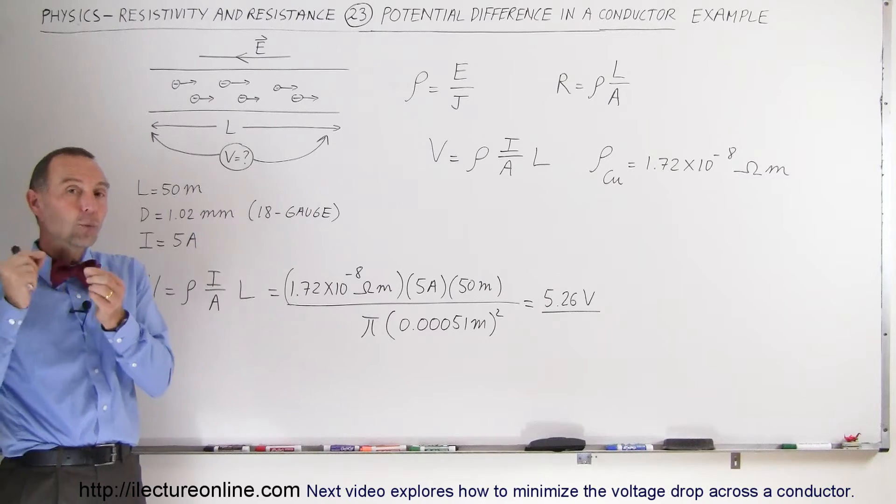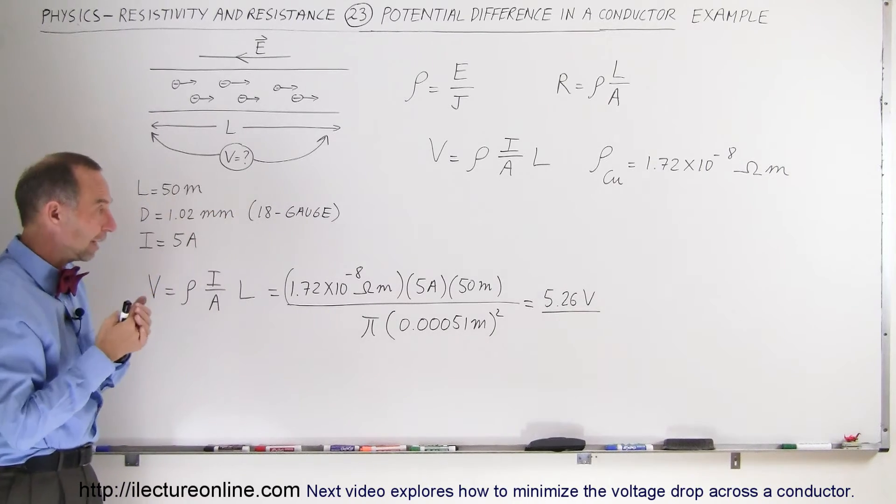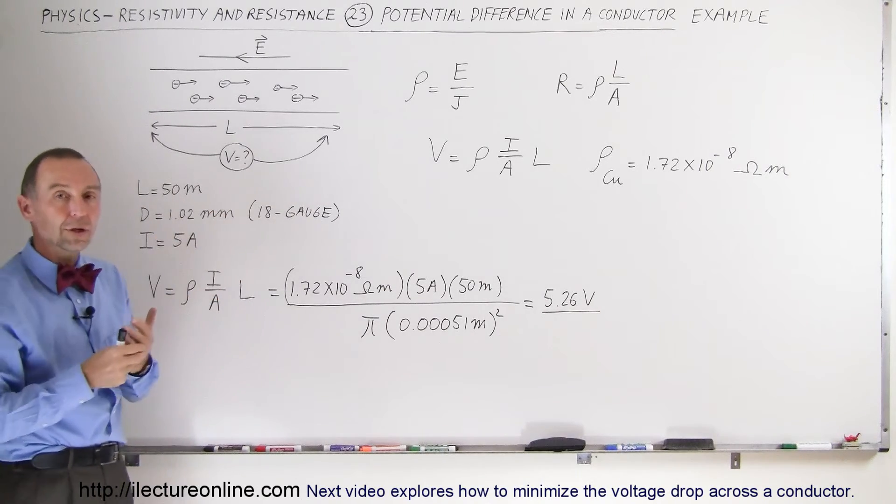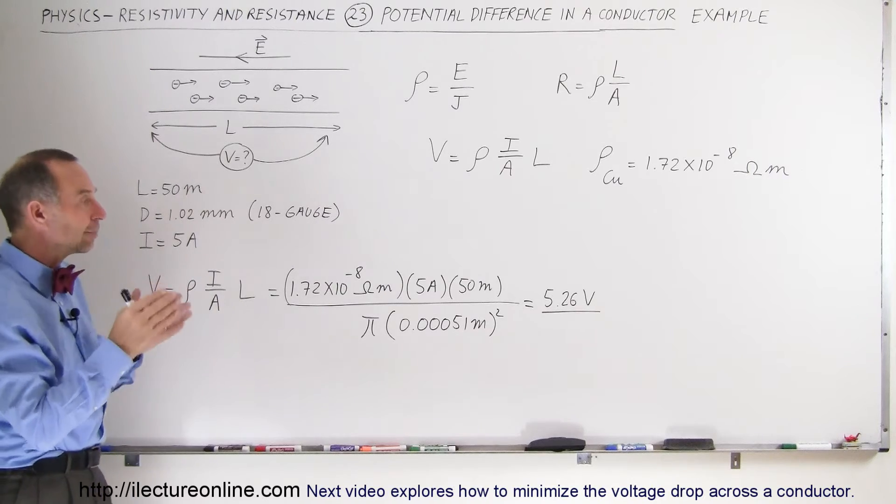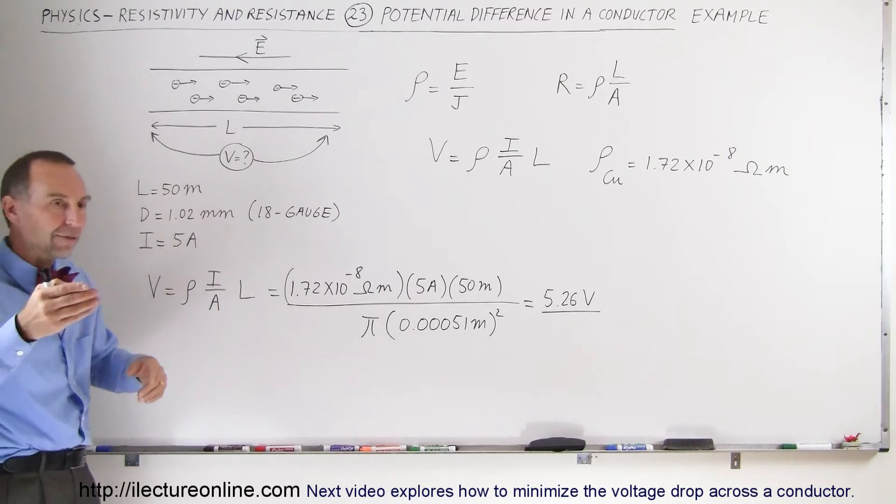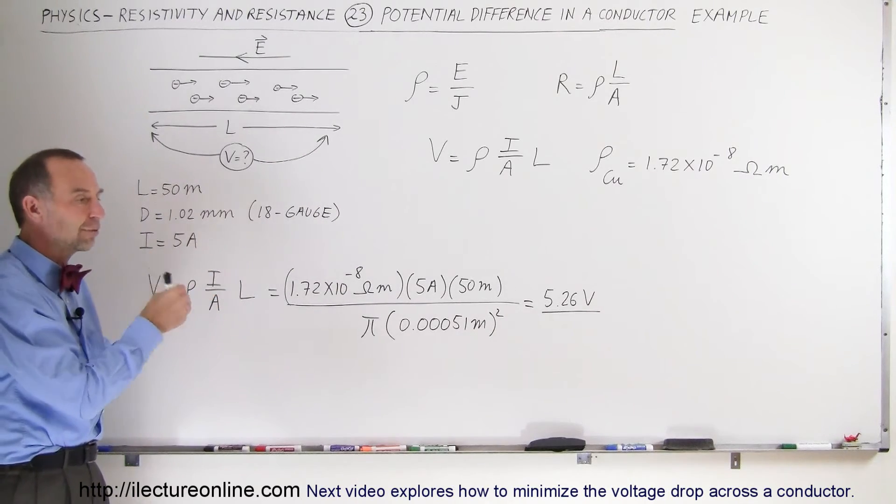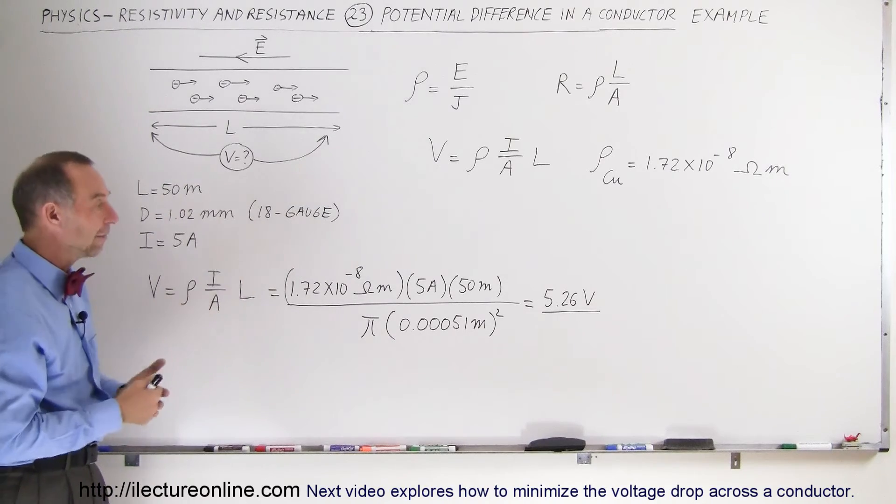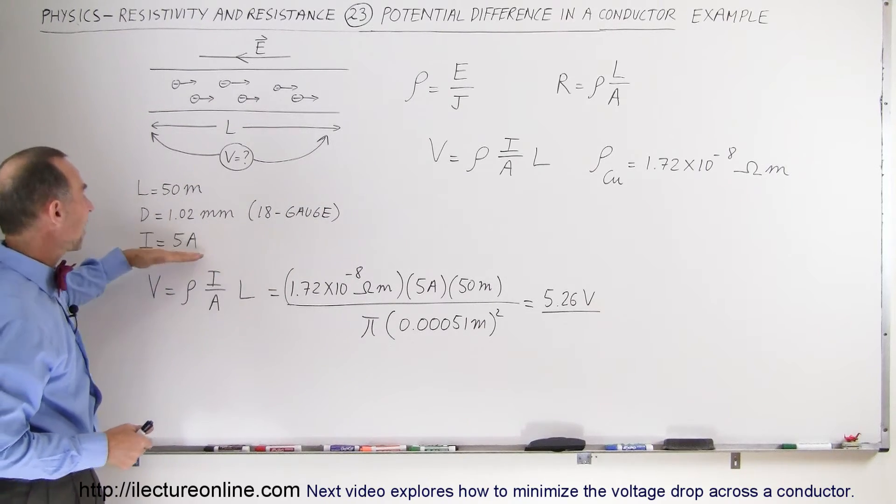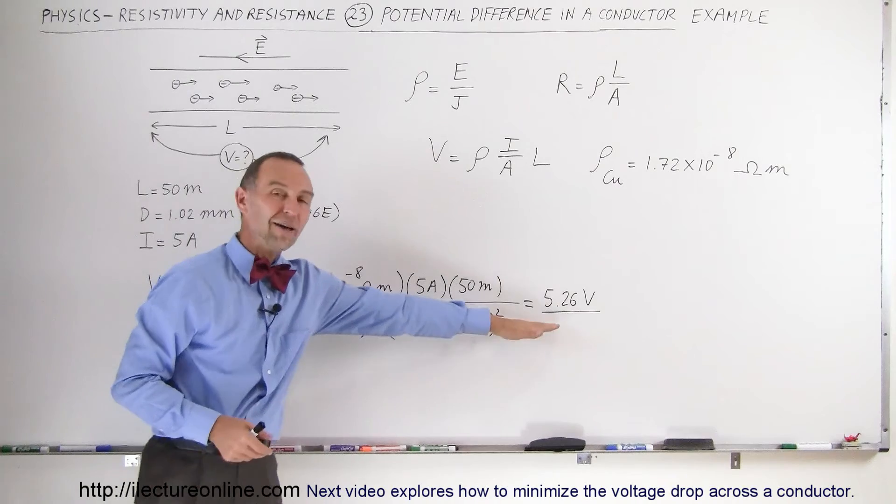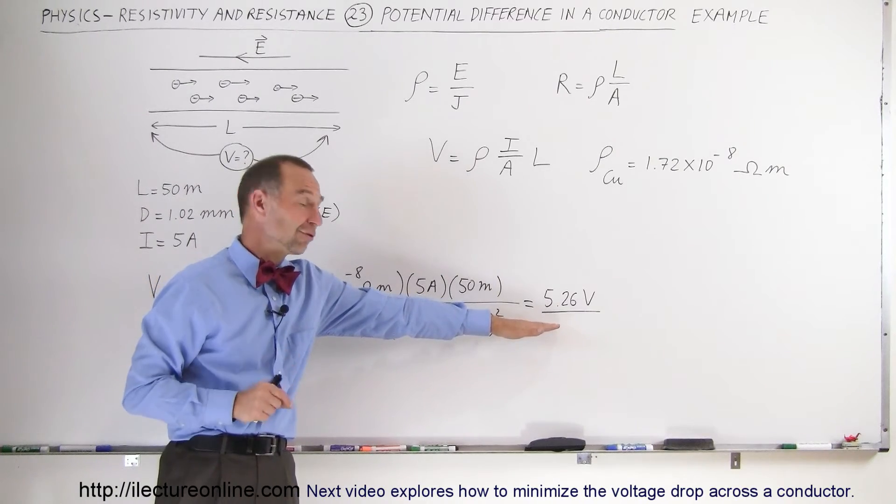And so if you run a long wire from the inlet box at the house and let's say that we have 100 feet or 150 feet of wire before we get to the room that you want to have outlets at and you run a 5 amp current through the wire, you lose 5 volts across the wire which is kind of interesting.